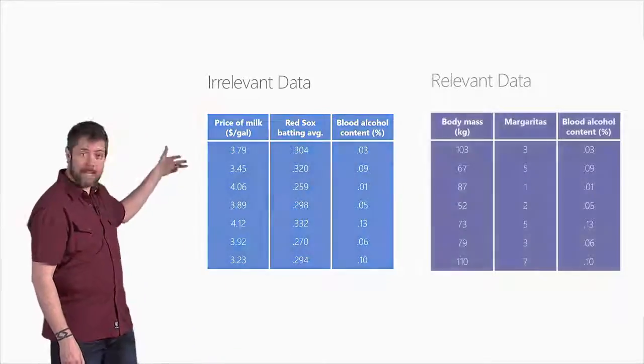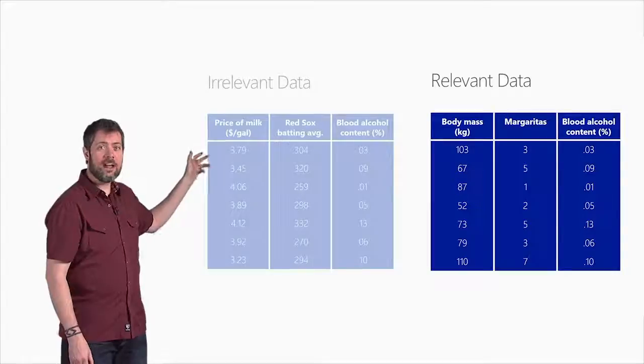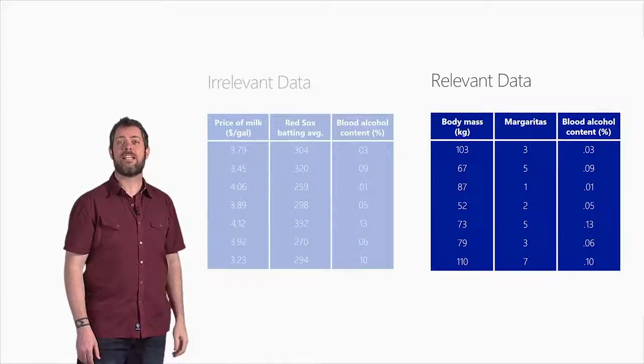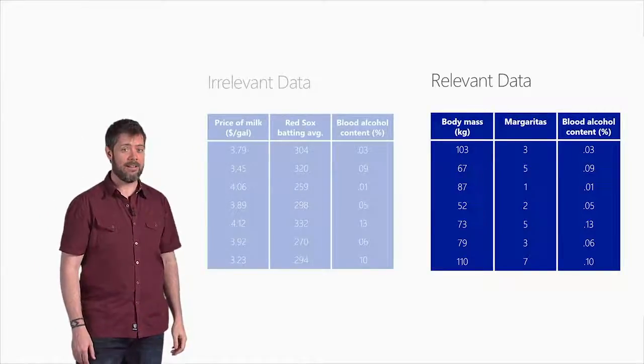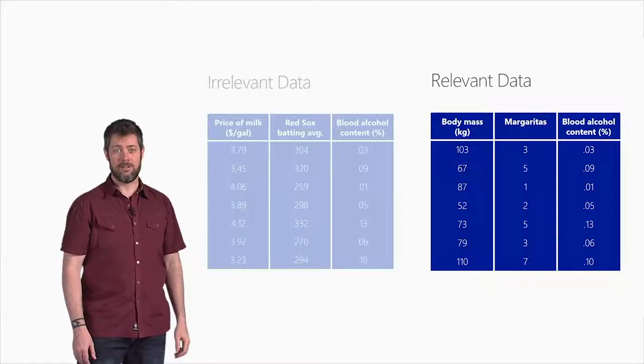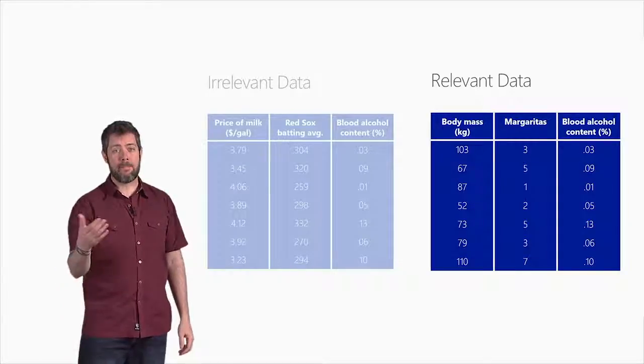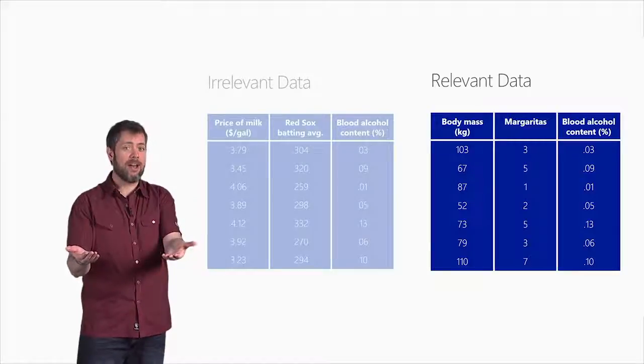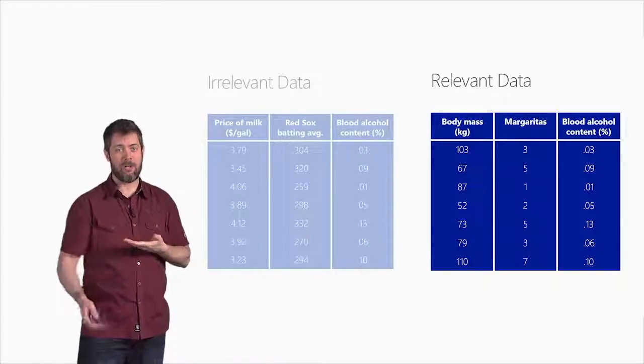Now, check out the table on the right. This time we measured each person's body mass and counted the number of drinks they've had. The numbers in each row are now relevant to each other. If I gave you my body mass and the number of margaritas I've had, you could make a pretty good guess at my blood alcohol content.